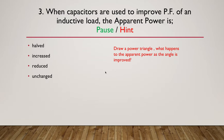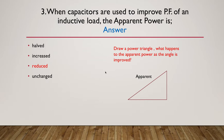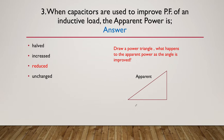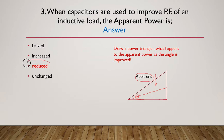The answer is the apparent power is reduced. Draw the triangle and you can see the apparent power is the hypotenuse. If the angle gets smaller — that's the improvement — the apparent power goes down in value as the angle gets smaller and smaller until eventually the angle becomes zero and the apparent power and the real power are at unity or in phase with each other. So the answer is apparent power is reduced.